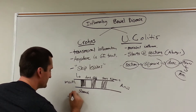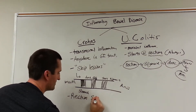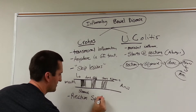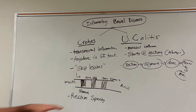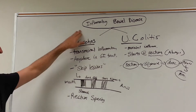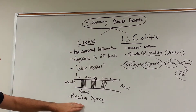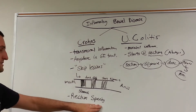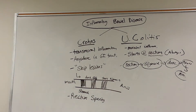Notice that Crohn's is rectum sparing. That's a very key distinguishing factor between the inflammatory bowel diseases — while Crohn's disease is rectum sparing, ulcerative colitis is not.